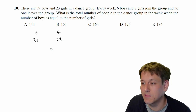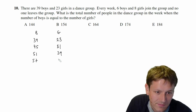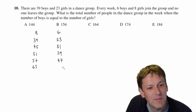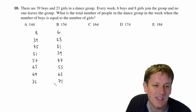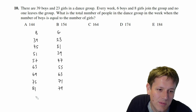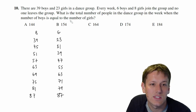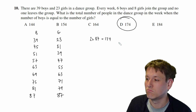Starting with 39 boys and 23 girls, after each week we add 6 and 8 respectively: 45 & 31, then 51 & 39, then 57 & 47 — and continuing until both numbers are equal. Eventually we reach 87 boys and 87 girls. The total is 2 times 87, which is 174. The answer is D: 174.